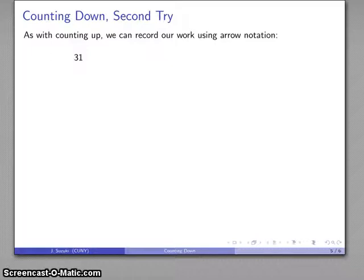So, I started at 31. I went back 1, indicated using this minus 1 above the arrow. I went back 1 to 30, back 1 to 29, back 1 to 28, back 1 to 27, back 1 to 26, back 1 to 25, back 1 to 24. So, I've gone back 7, and I end at 24.